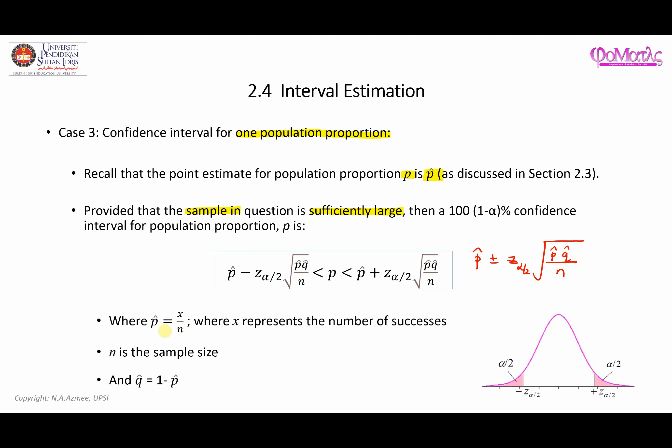Remember that P hat is equal to X over N. This is what you have already seen in the video related to the point estimation. And X here represents the number of successes, and N is the sample size.